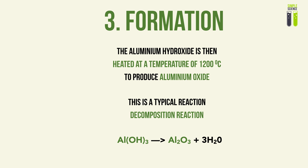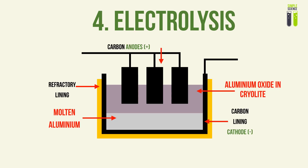We obtain pure aluminium oxide by heating aluminium hydroxide at a temperature of 1200 degrees Celsius. This is a typical decomposition reaction where one compound is heated to produce two compounds: pure aluminium oxide and water. So now we have obtained pure aluminium oxide, and we proceed to the main process of electrolysis.